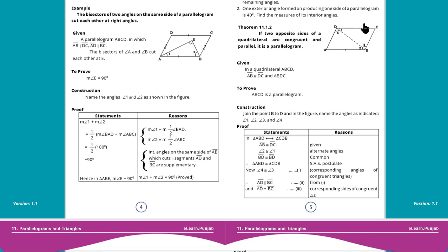جب دونوں triangles congruent ہو جاتی ہیں تو ہم لکھتے ہیں: therefore triangle ABD is congruent to triangle CDB - reason: Side-Angle-Side postulate۔ اور جب بھی 2 triangles congruent ہو جاتی ہیں تو ان کے تمام corresponding sides اور تمام corresponding angles بھی congruent ہو جاتے ہیں۔